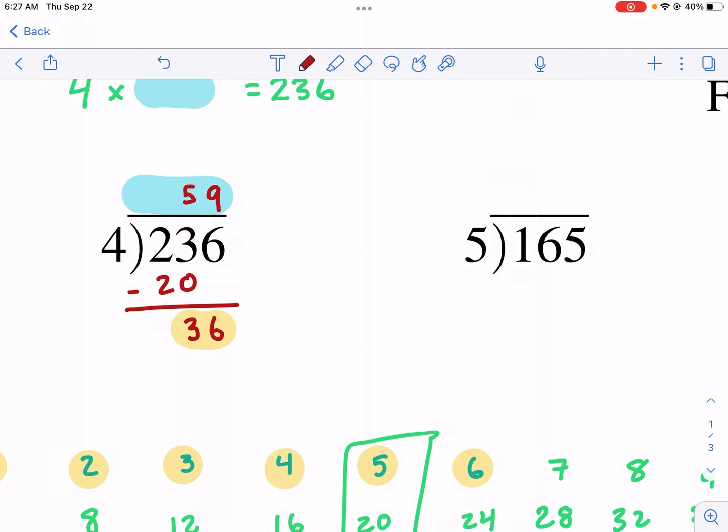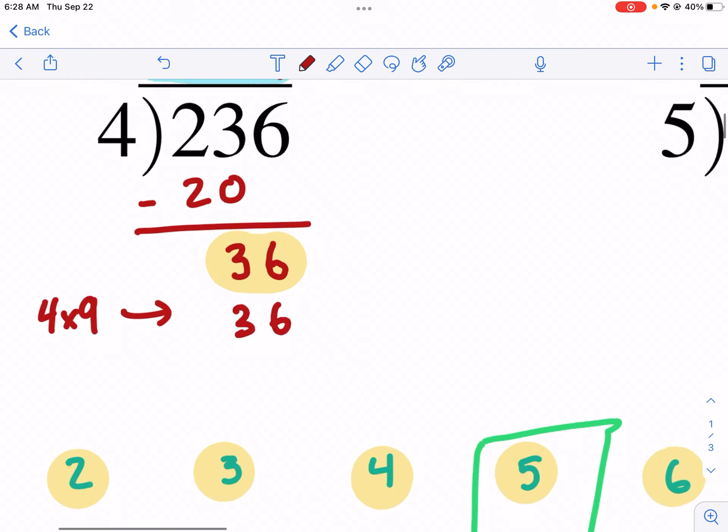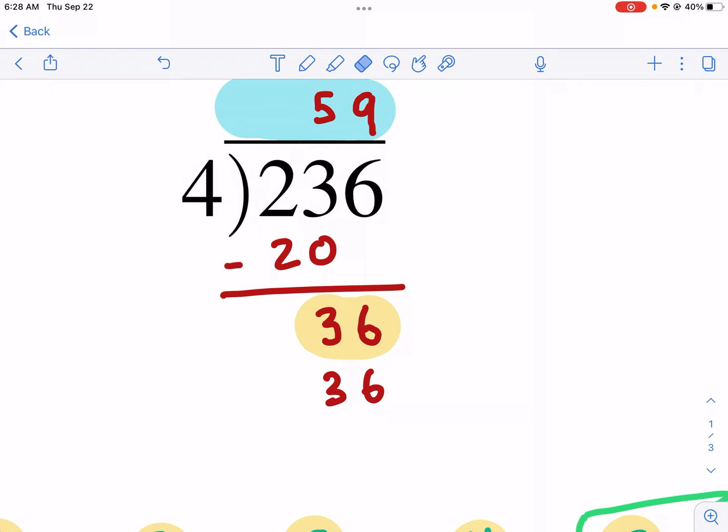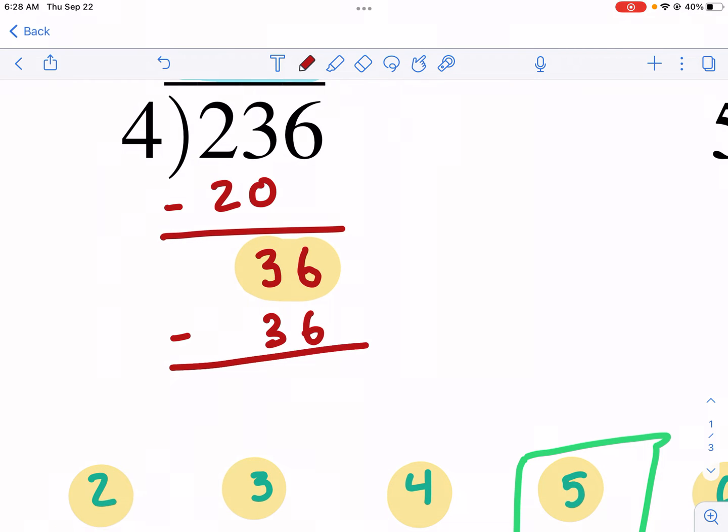So we had 4 times 6 is 24. Then we have 4 times 7 is 28. Then we have 32, and we get to 36. So we get to it exactly. So technically, the answer to this problem is 9. But I don't want to write it here. I'm going to write it over here in our big problem. I'm going to write that 9 right there. That represents that I do 4 times 9, and then that equals 36. I'm going to write that underneath right there.